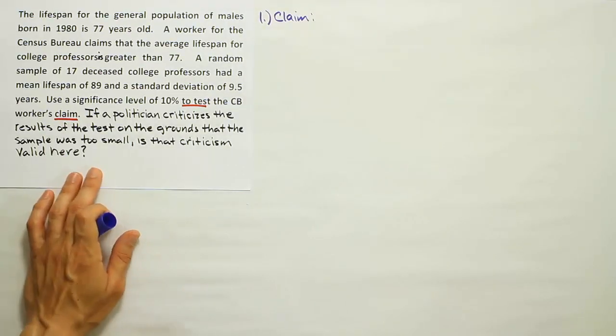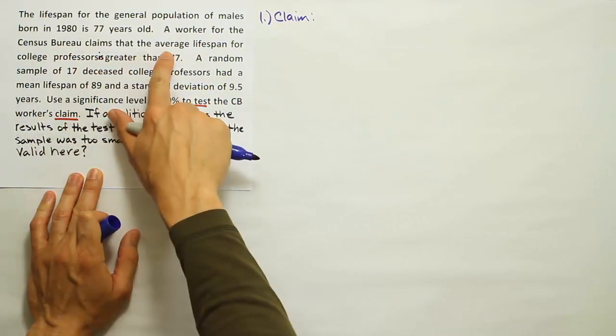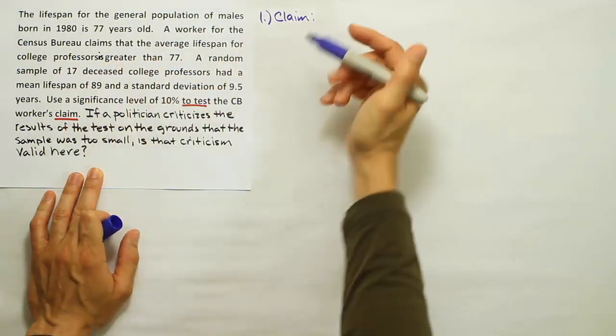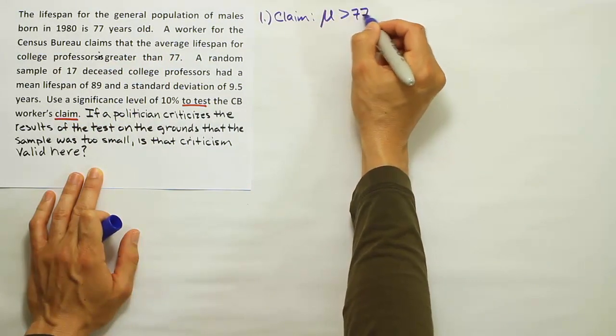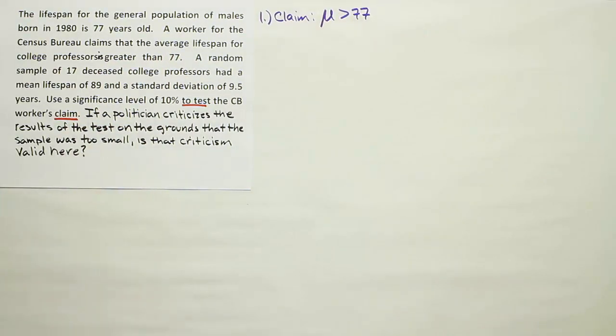It says here that a worker for the Census Bureau claims the average is greater than 77. So the average lifespan is greater than 77 for college professors. That's what the Census Bureau worker claims.